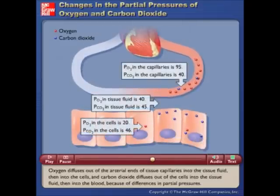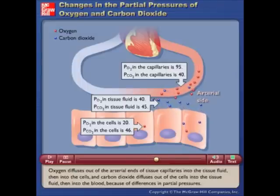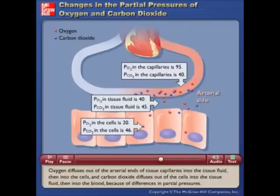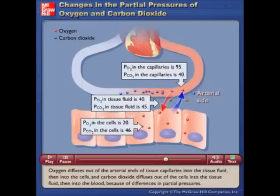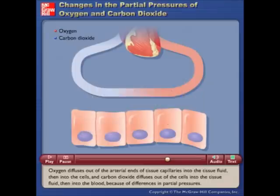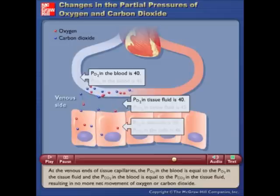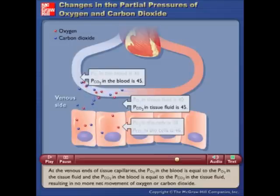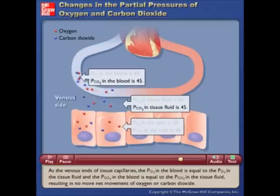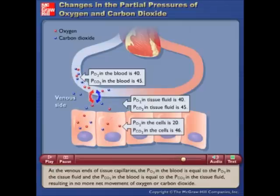Oxygen diffuses out of the arterial ends of tissue capillaries into the tissue fluid, then into the cells, and carbon dioxide diffuses out of the cells into the tissue fluid, then into the blood, because of differences in partial pressures. At the venous ends of tissue capillaries, the pO2 in the blood equals the pO2 in the tissue fluid, and the pCO2 in the blood equals the pCO2 in the tissue fluid, resulting in no more net movement of oxygen or carbon dioxide.